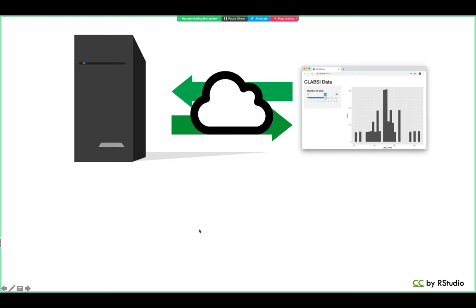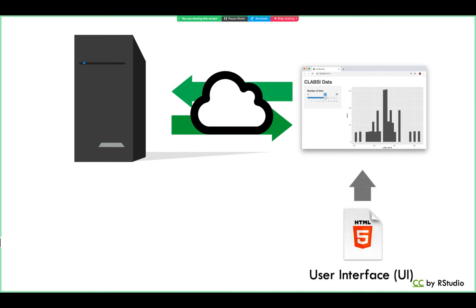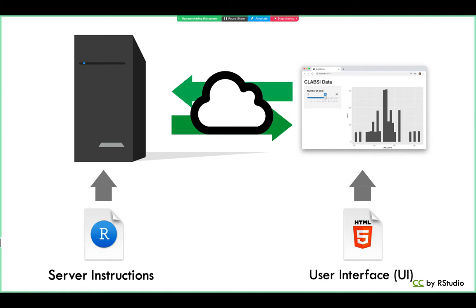So what does this mean for you as a Shiny developer? When you make a Shiny app, you need to make two components for each app. For the user interface, this will be a web page that users will see — really just a web document written in HTML, but you don't need to know any HTML because we will generate this document from R. The second component is a set of instructions written in R to tell the server how to build the output objects and how to react when the user changes input objects.